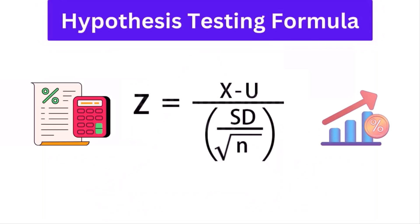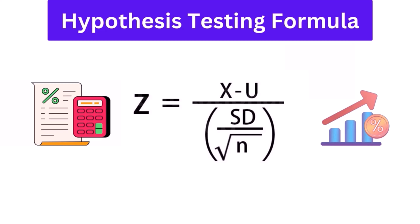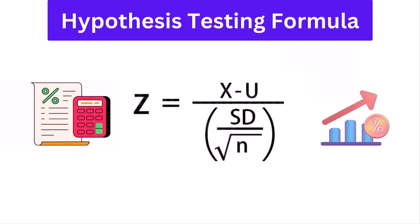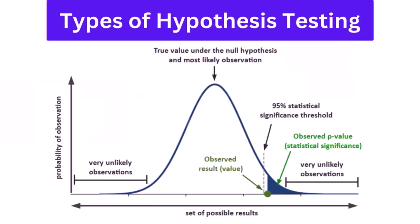Hypothesis testing formula: Depending upon the type of data available and the size, different types of hypothesis testing are used to determine whether the null hypothesis can be rejected or not. The hypothesis testing formula for some important test statistics are as follows. Selecting the correct test for performing hypothesis testing can be confusing. These tests are used to determine a test statistic on the basis of which the null hypothesis can either be rejected or not rejected.